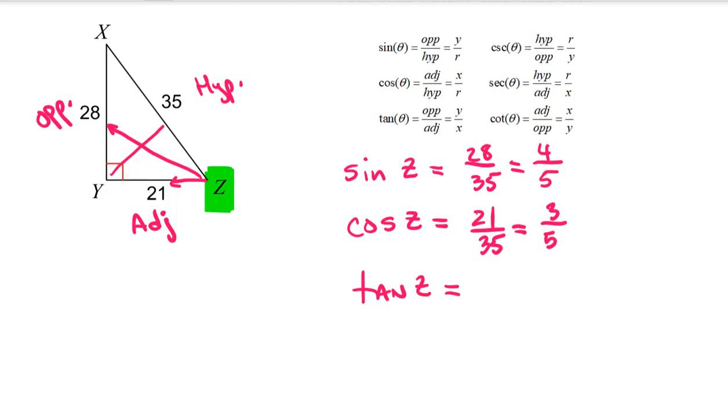And then lastly, we'll find the tangent function. So the tangent function, opposite over adjacent, and opposite is 28, and the adjacent is 21. When we reduce that, both of them divide by seven, you'll get four over three. So those are the big three, those you should remember from your days in geometry class.